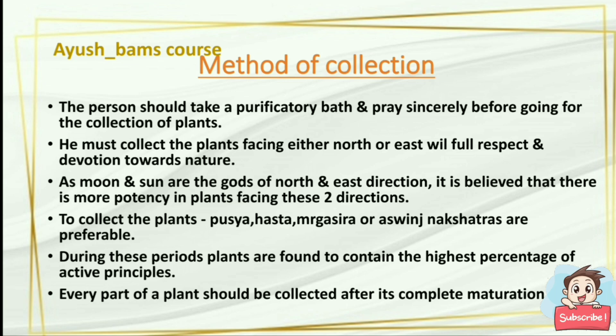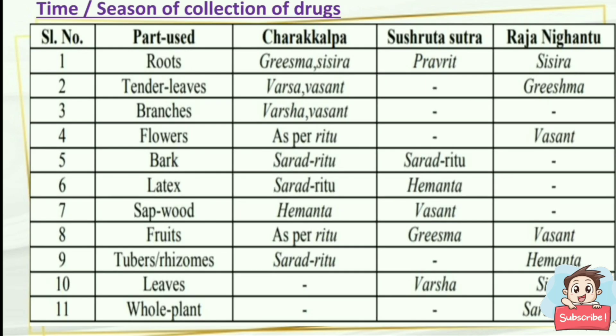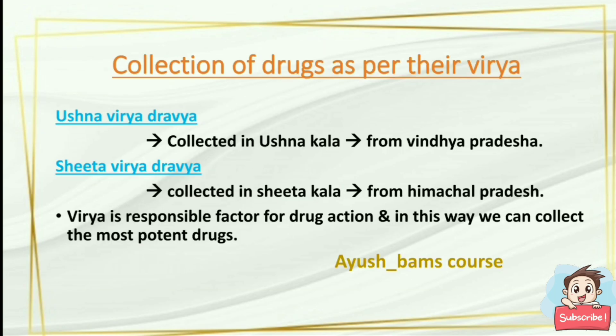Every part of a plant should be collected after its complete maturation — we should not collect any plant before maturation. There is a table which specifies in which season we should collect the drugs, as there are specific times and seasons for collection. Please refer this table, which specifies the part used and in what seasons we should collect these drugs.